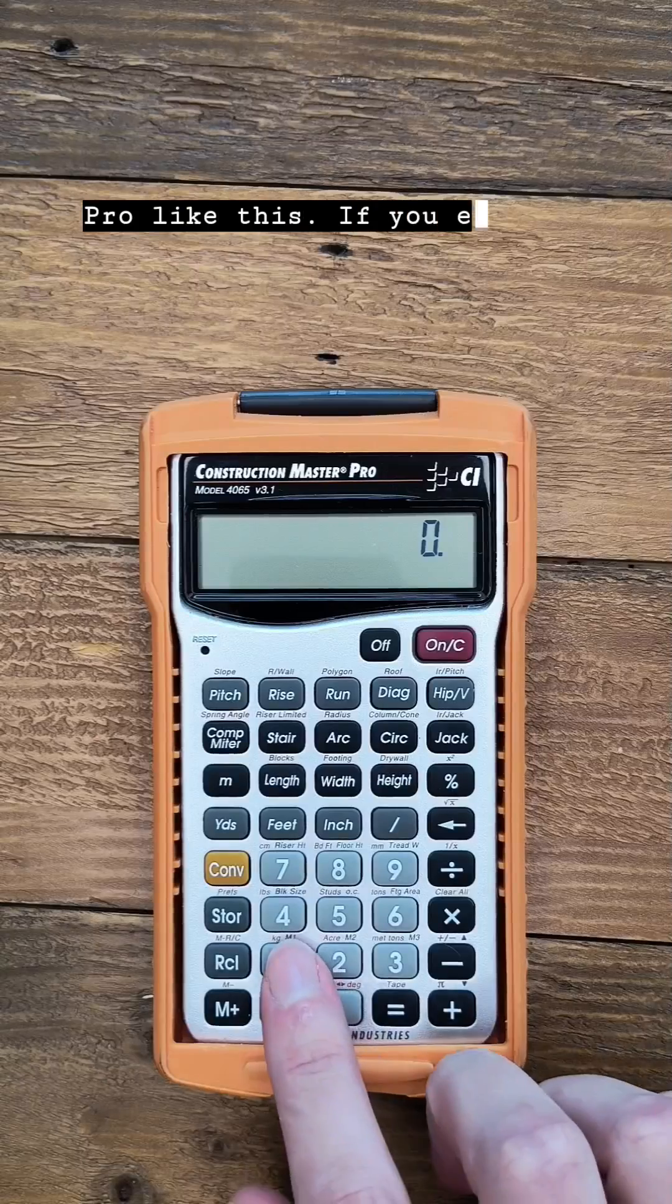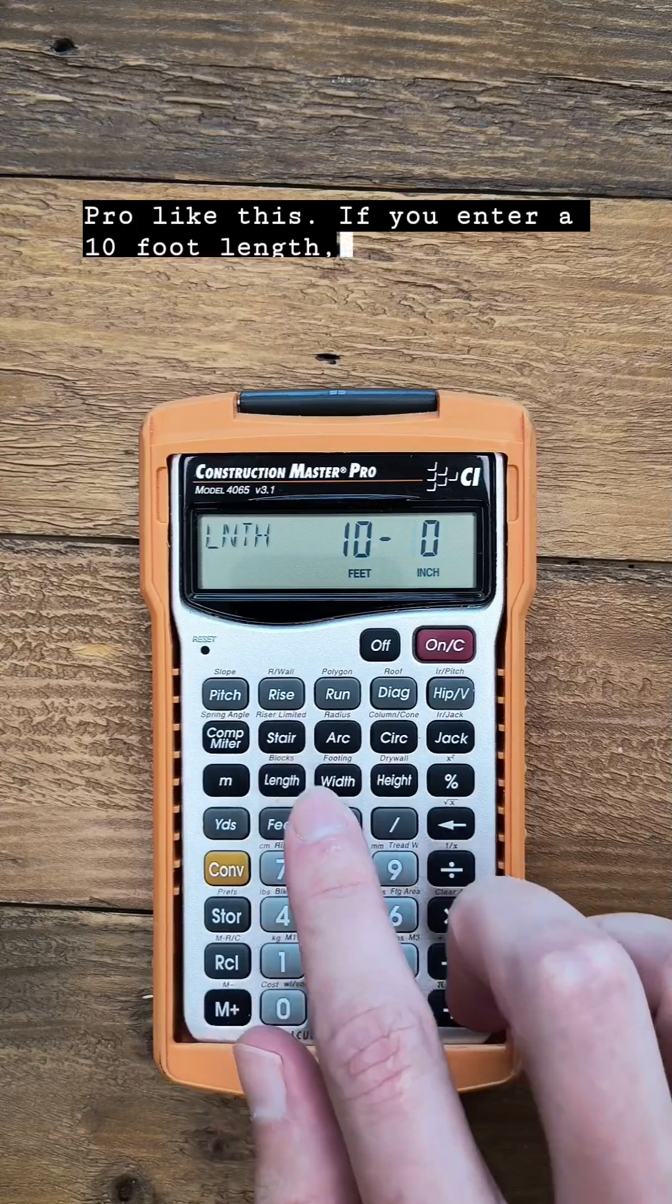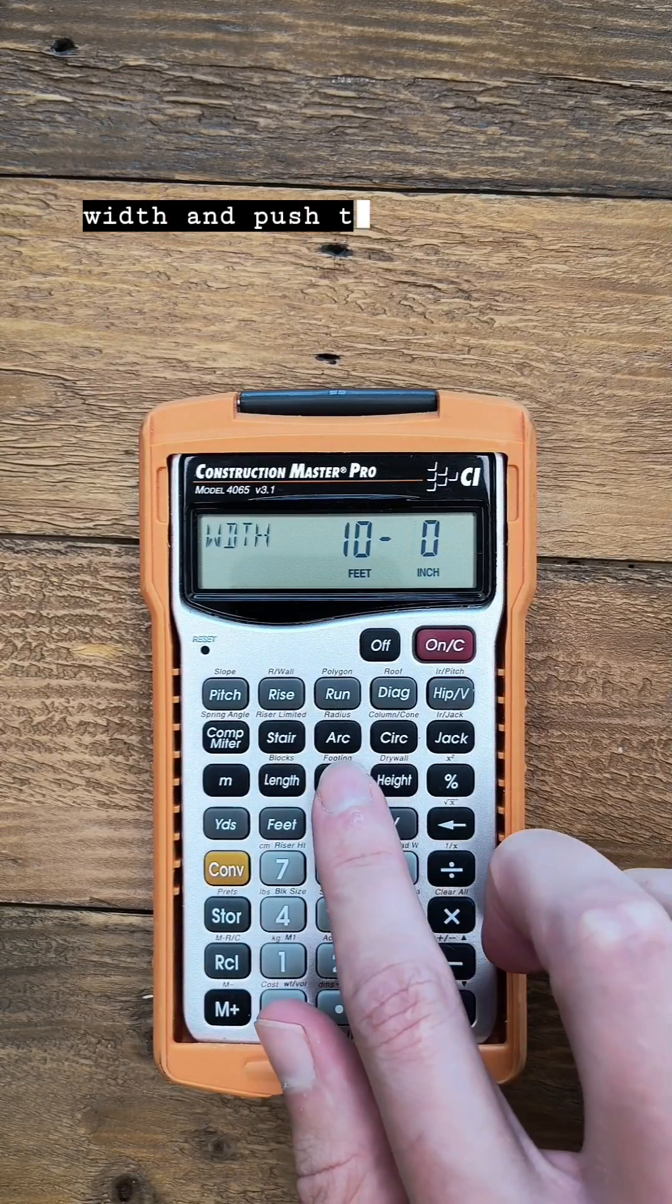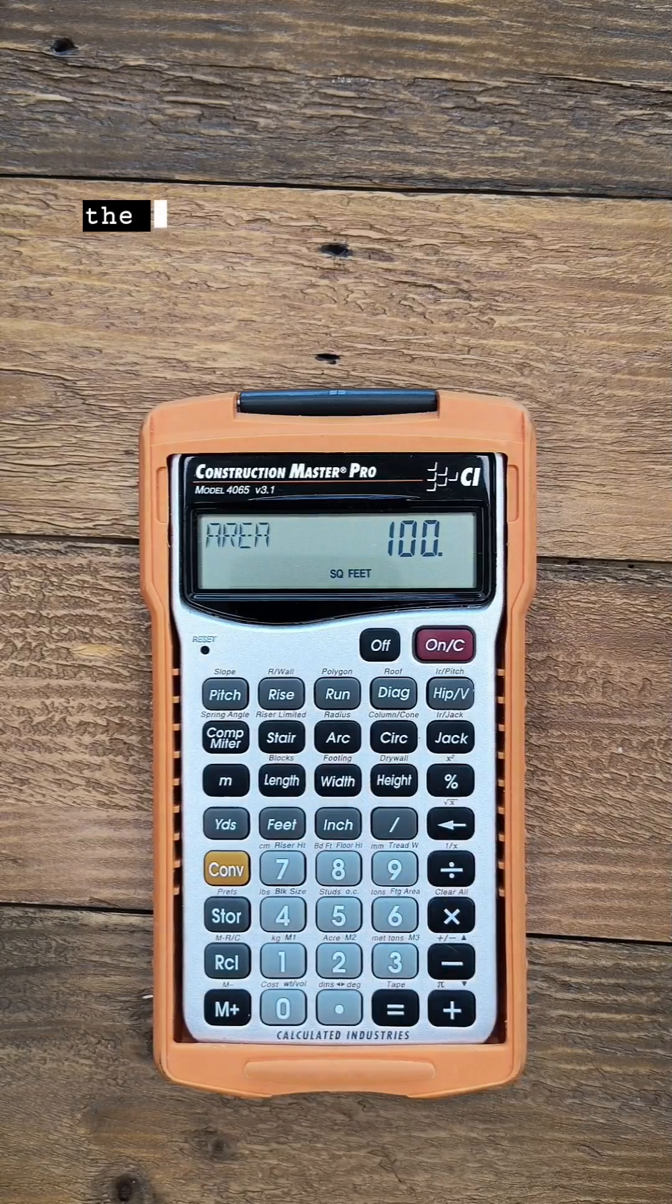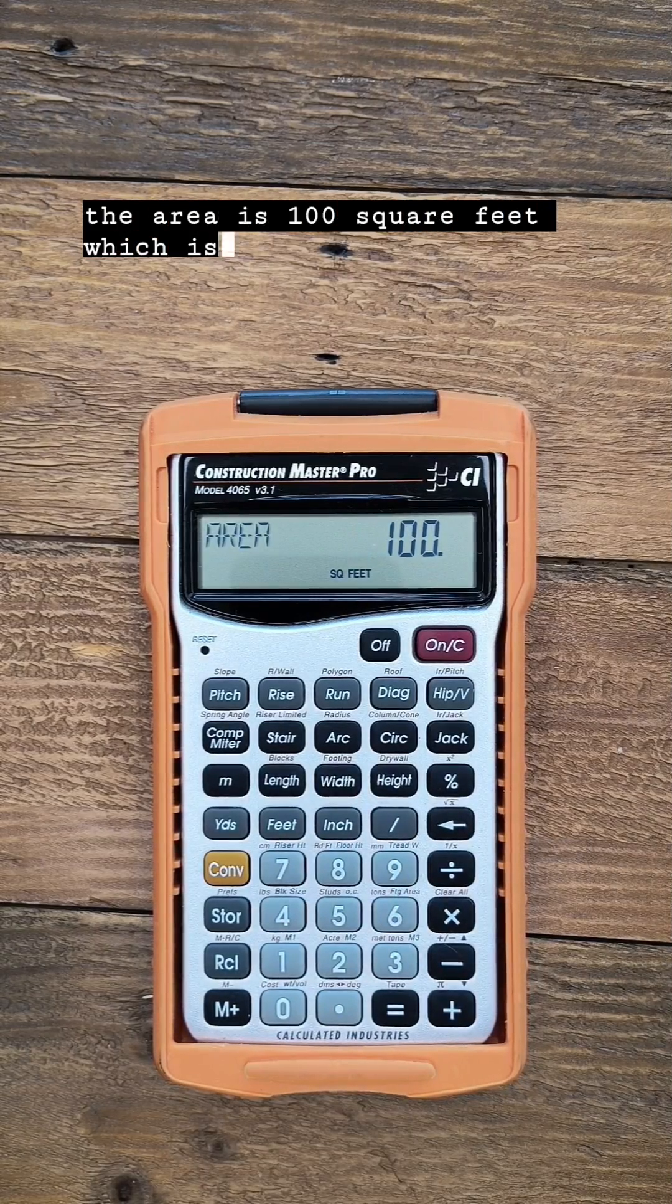Like this. If you enter a 10 foot length, a 10 foot width, and push the width button again, you'll see that the area is 100 square feet, which is pretty simple.